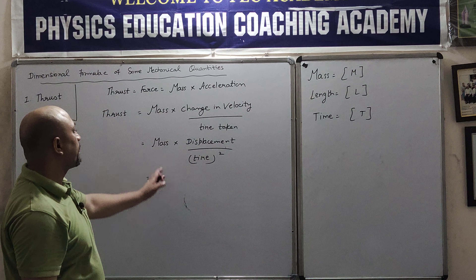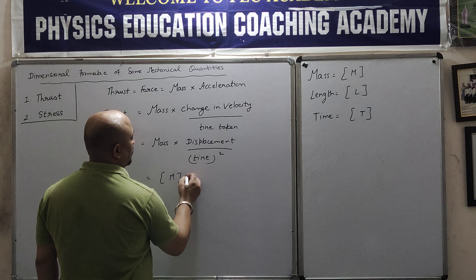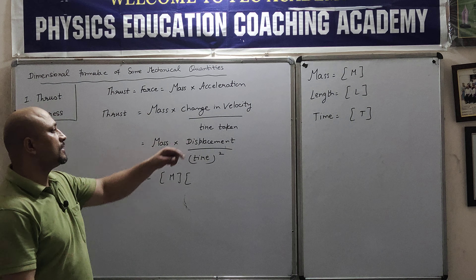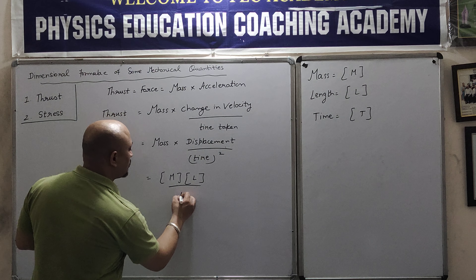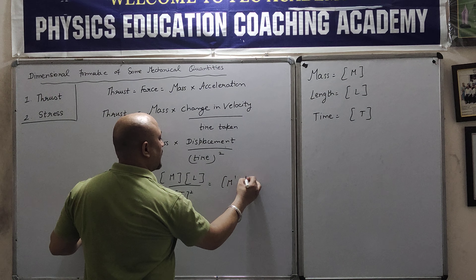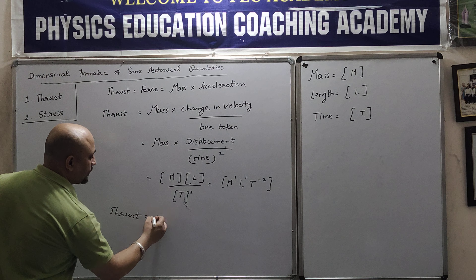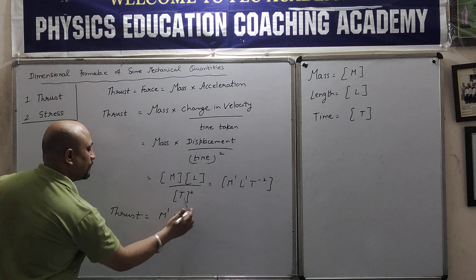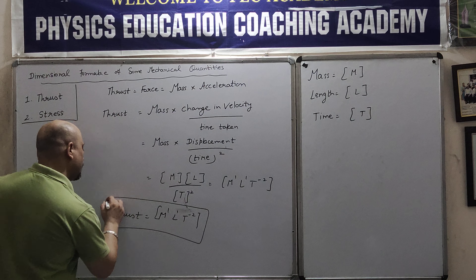Let us put in the values. The dimension of mass is M. Displacement is measured in length, so its dimension is L. The dimension of time is T. So T gets squared. This gives us M¹, L¹, T⁻². So the dimension of thrust is M¹L¹T⁻².